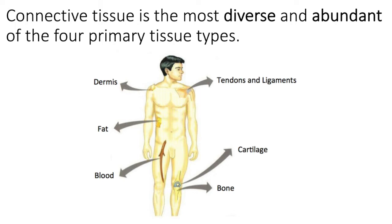For example, connective tissue of the dermis provides a framework. The connective tissue that is blood transports cells and molecules throughout the body. Bone tissue provides a framework for your skeleton. Cartilage — even within that category, the functions of each of the three types of cartilage differ. So when we get to each of the individual connective tissues, it will be important to pay attention to the structure, the locations, and the individual and unique functions.